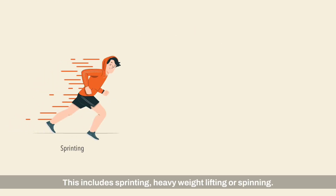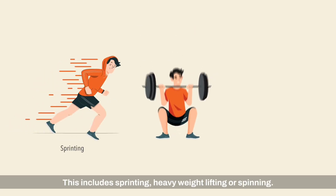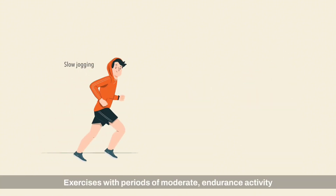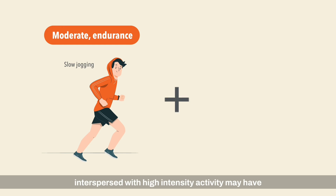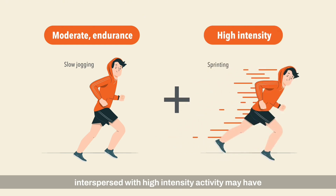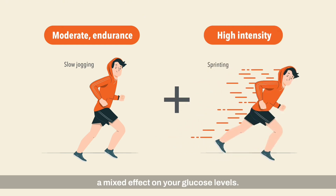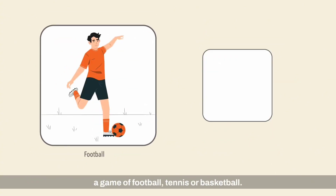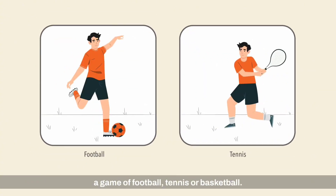Explosive activities include sprinting, heavy weight lifting, or spinning. Exercises with periods of moderate endurance activity interspersed with high-intensity activity may have a mixed effect on your glucose levels. Examples of such activities include a game of football, tennis, or basketball.